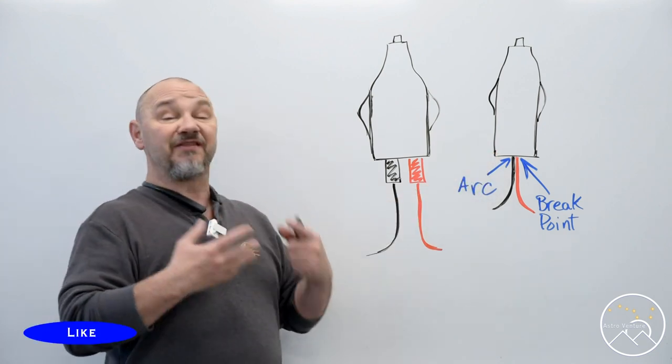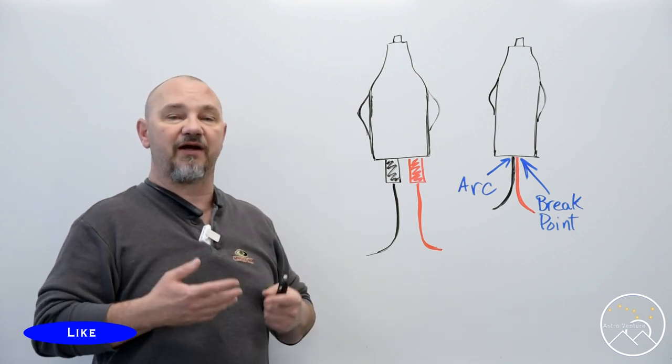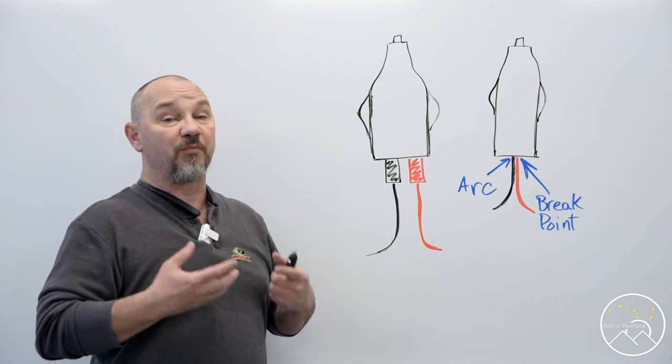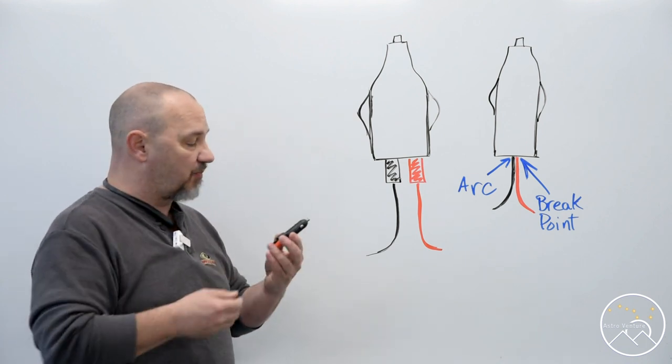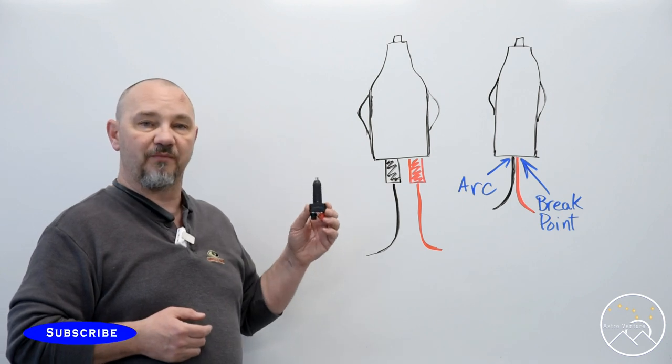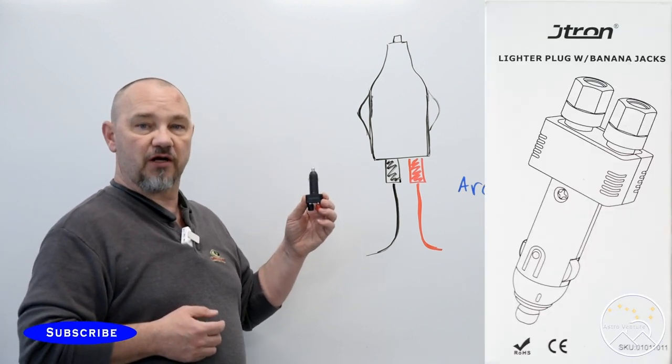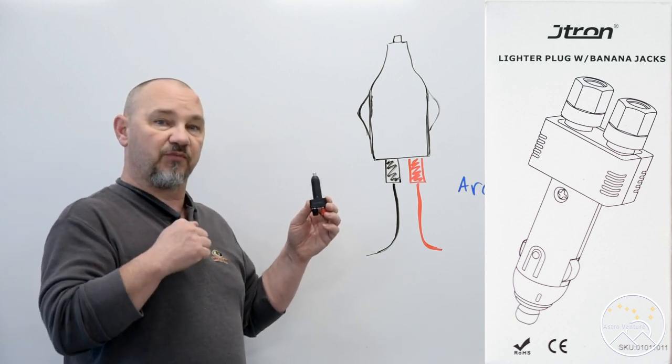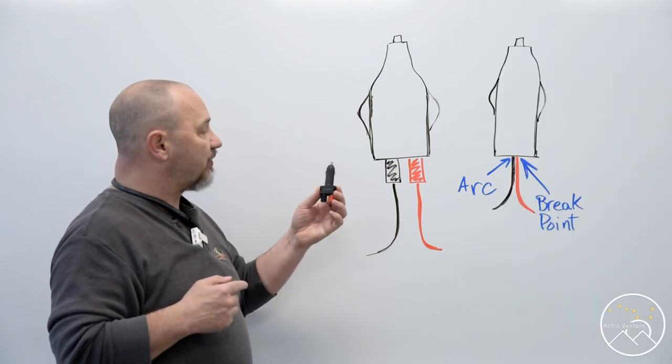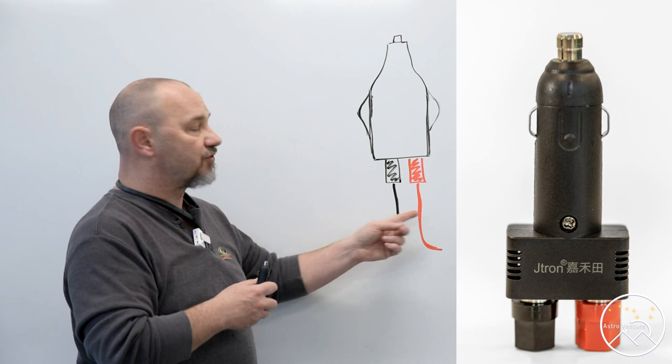So being thankful that the fuses did blow and saved my equipment, I wanted a more permanent fix, a more permanent solution. I started doing some exploring and I came upon this 12 volt male connector. And this one is from J-Tron and I have no affiliation or connection. I will include the link below on where you can locate these. But the beauty of this plug is that it separates the wires as you can see here in the drawing.